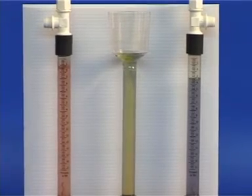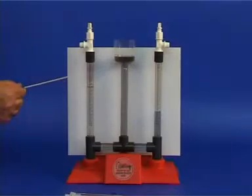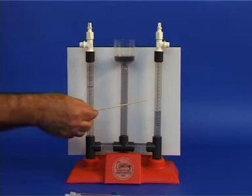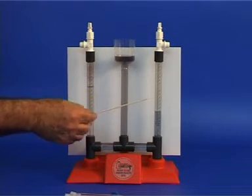The volume on the right side is double the volume on the left side. The gas collected in the left tube is oxygen and the gas in the right tube is hydrogen.